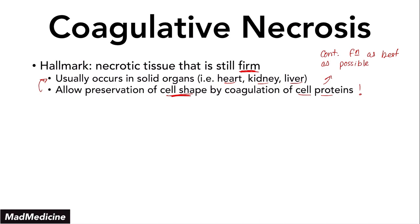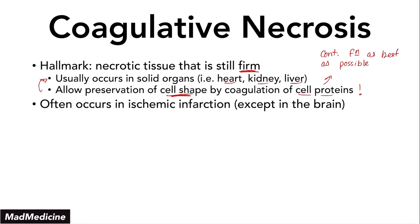For the most part, if it's a localized injury, the cells in that area will go through coagulative necrosis so the organ can continue to function as best as possible. Usually this is going to occur in ischemic infarctions, with the exception of the brain. The reason is that the brain isn't really considered a solid organ — the brain is squishy and able to herniate.